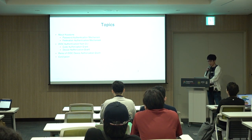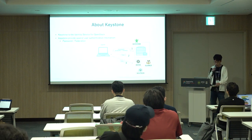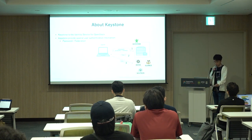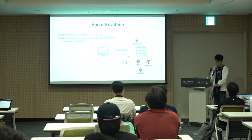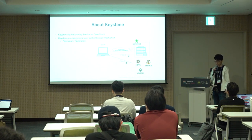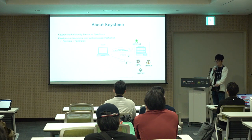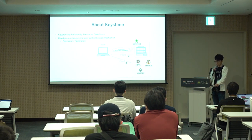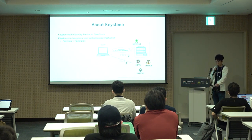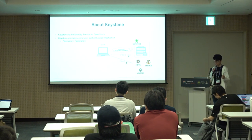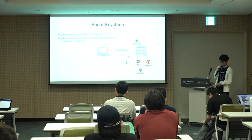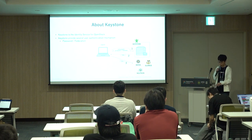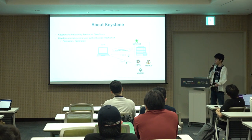The first topic is about Keystone. Keystone is an identity service for OpenStack. Keystone authenticates users using a certain authentication method and issues a user token. Users then use this token to send requests to Nova and other APIs. If the token is verified, the request is successful. Keystone provides authentication mechanisms such as password and federation, and I will explain these two mechanisms.